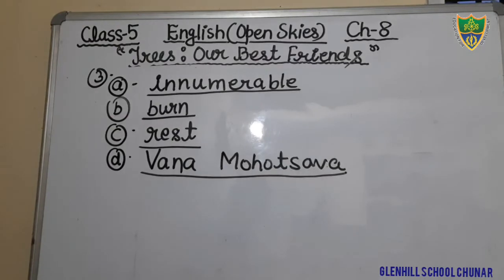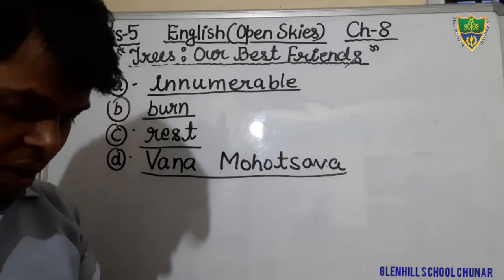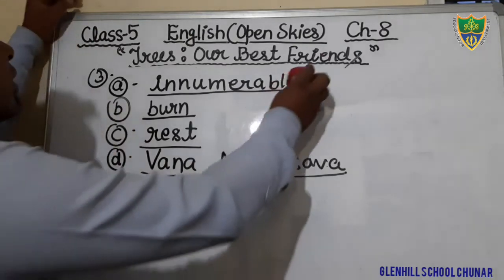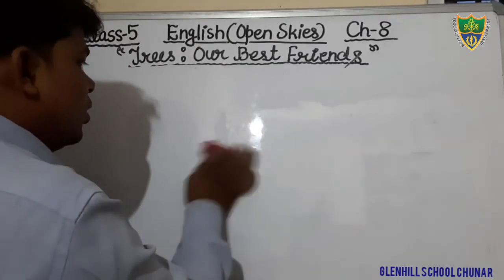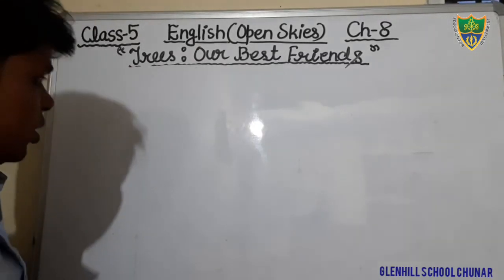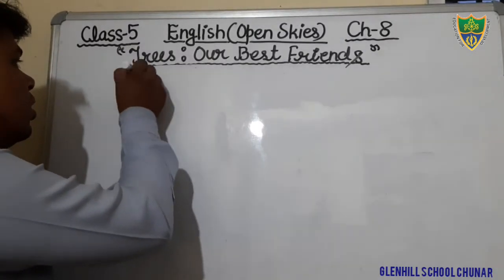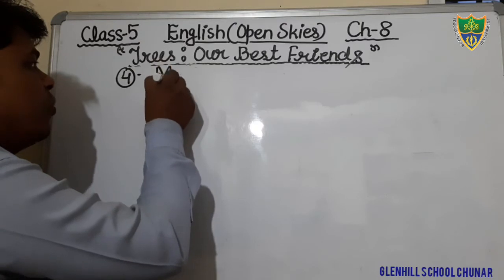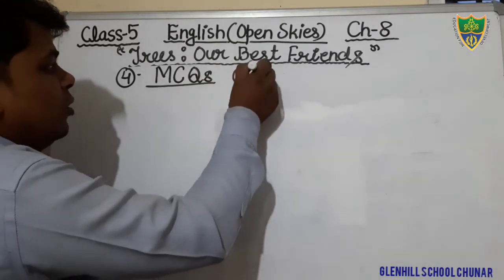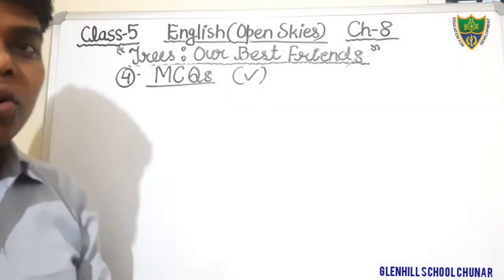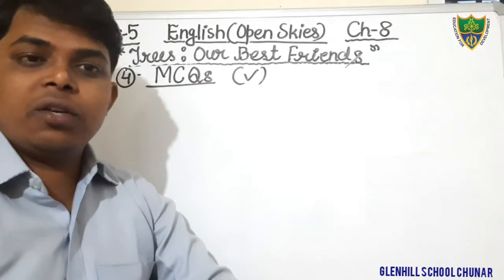Complete Exercise 3, Filling the Blanks, in your book. If you have any doubts, you can ask on WhatsApp. Now come to Exercise 4, that is Multiple Choice Questions. You have to put a tick on the correct option. There are four options given in each question and you have to tick only the one correct option.